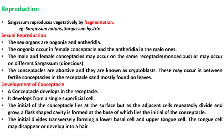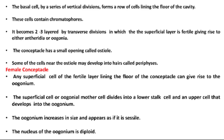The initial divides transversely forming a lower basal cell and an upper tongue cell. The tongue cell may disappear or develop into a hair. The basal cell, by a series of vertical divisions, forms a row of cells lining the floor of the cavity. These cells contain chromatophores. It becomes two to three layered by transverse divisions, in which the superficial layer is fertile, giving rise to either antheridia or oogonia.